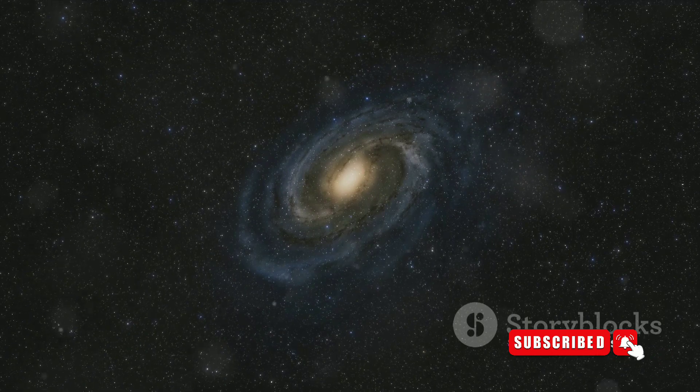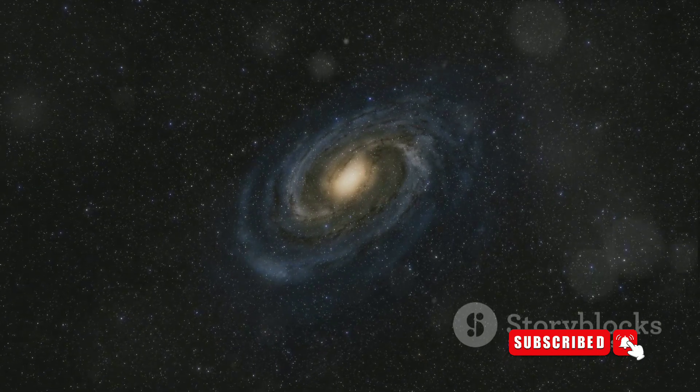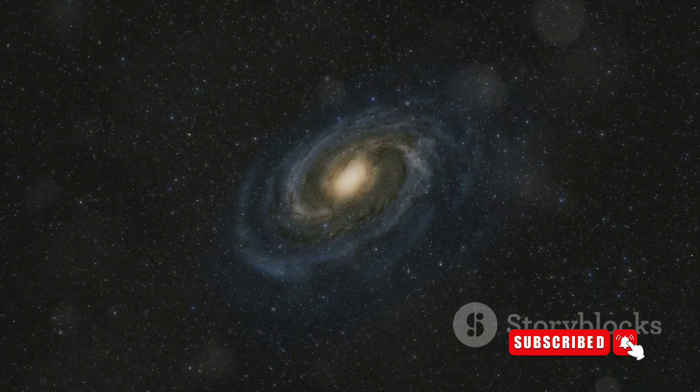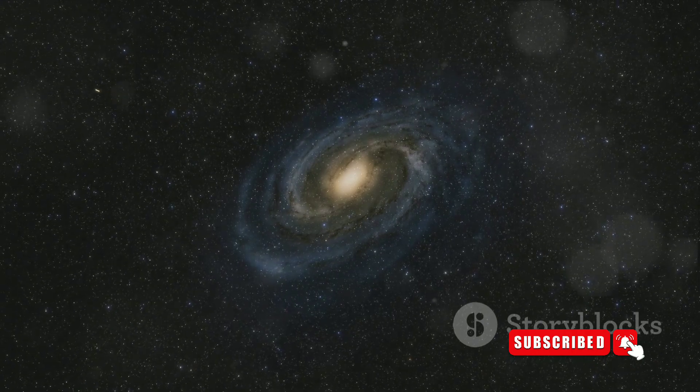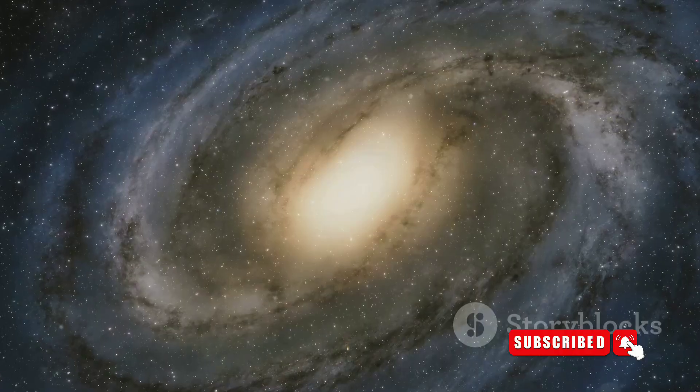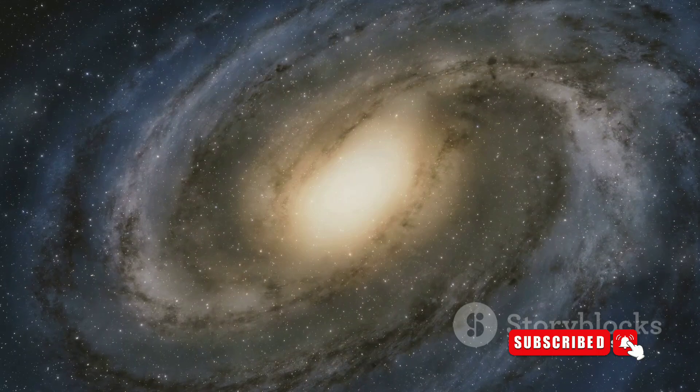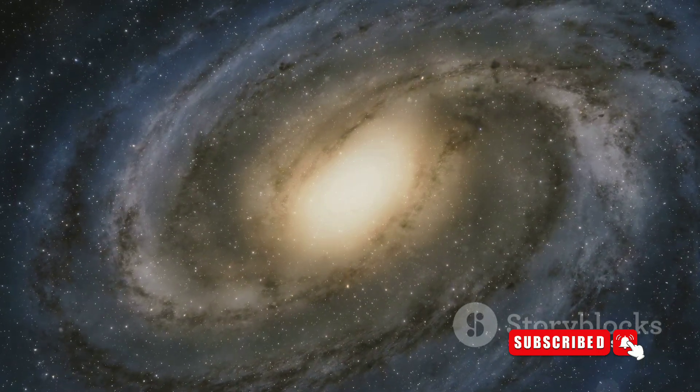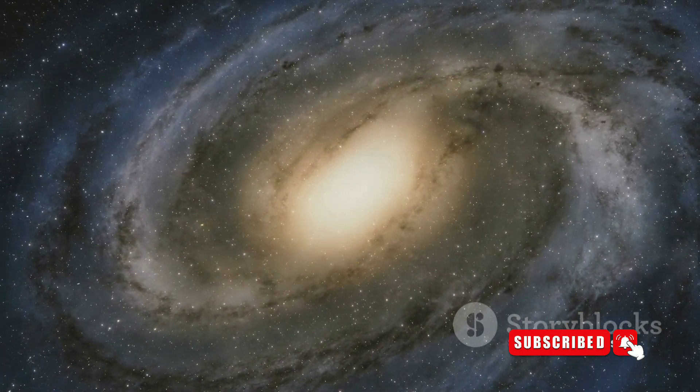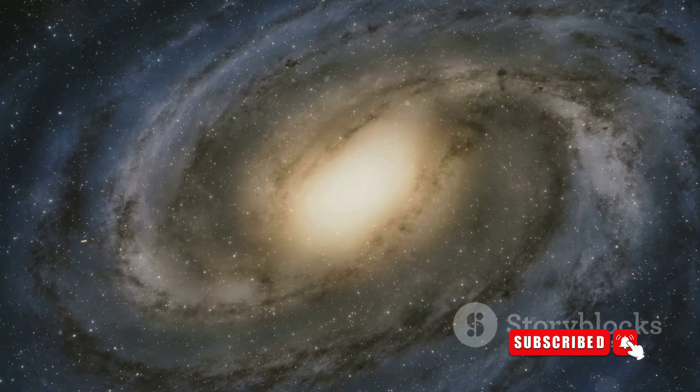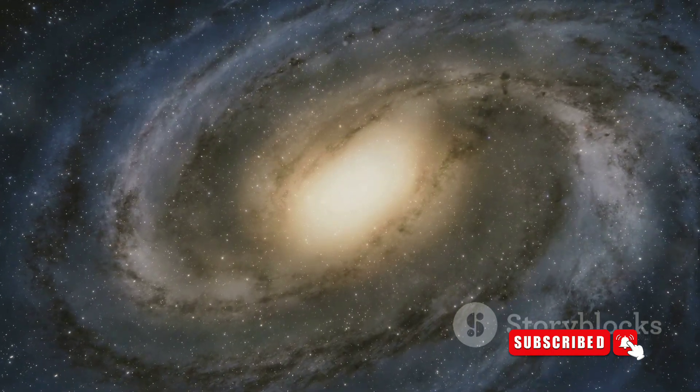Our Milky Way is also not as flat as we once thought. Recent studies show it's warped and twisted much like a vinyl record left out in the sun. This discovery was made by mapping the distribution of stars throughout the galaxy. The reason behind this distortion is still a subject of ongoing research, but it might be due to the spinning force of the Milky Way's massive inner disk of stars.